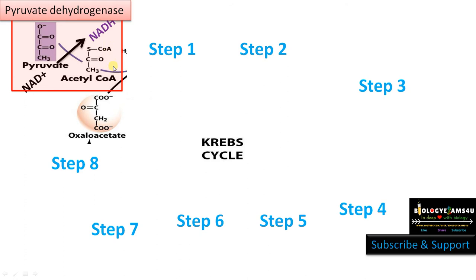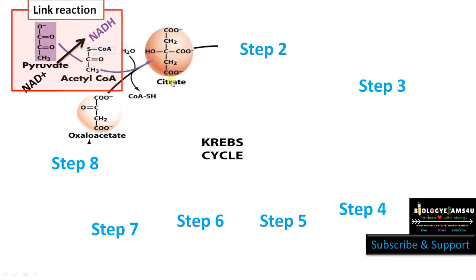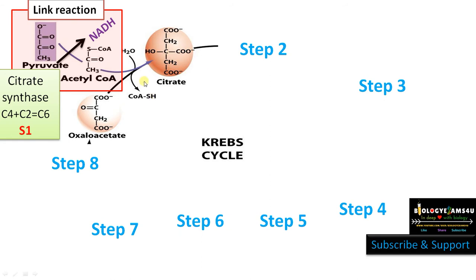At the beginning of the citric acid cycle, in step 1, oxaloacetate, a 4-carbon compound, combines with acetyl coenzyme A which is a 2-carbon compound, forming citrate or citric acid which is a 6-carbon compound, and the enzyme involved is citrate synthase. That is why the cycle is also called the citric acid cycle. The reaction is a condensation reaction.